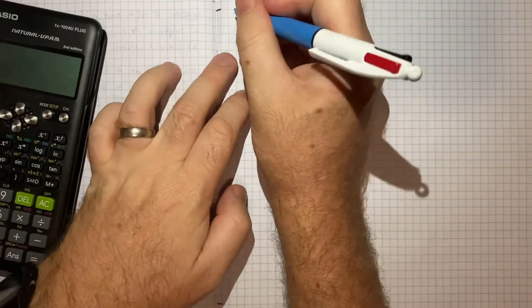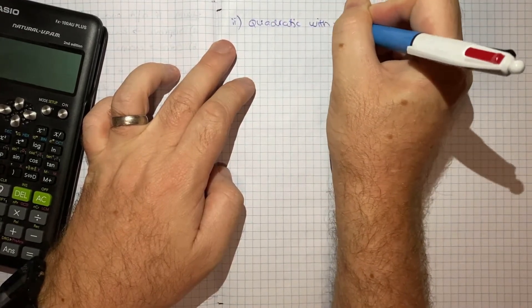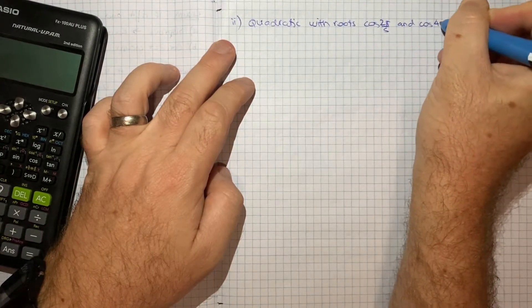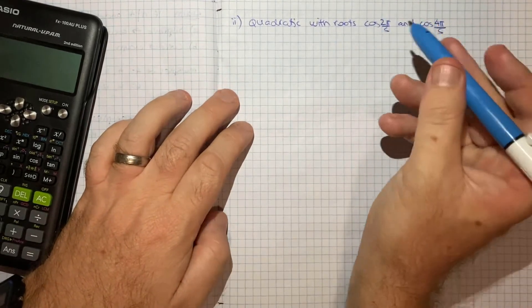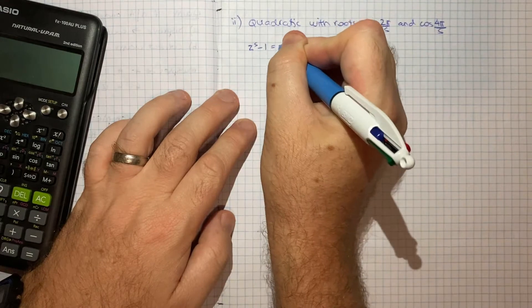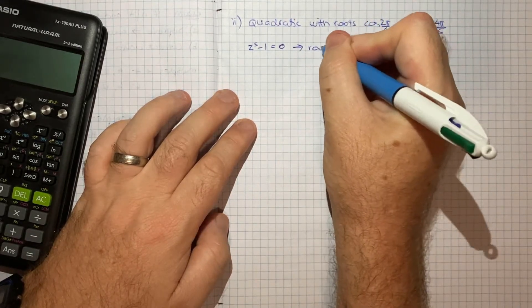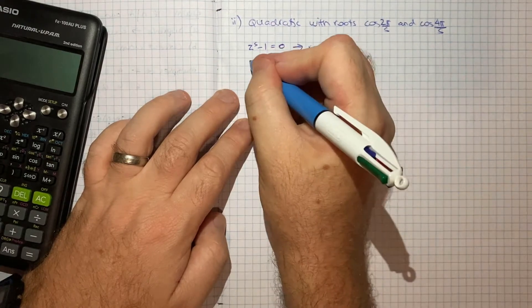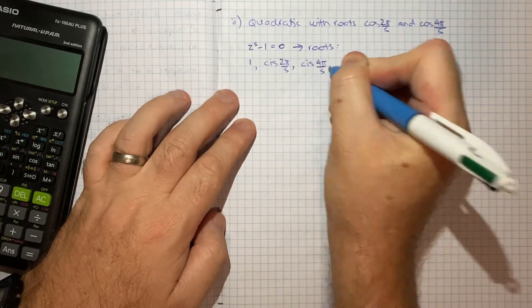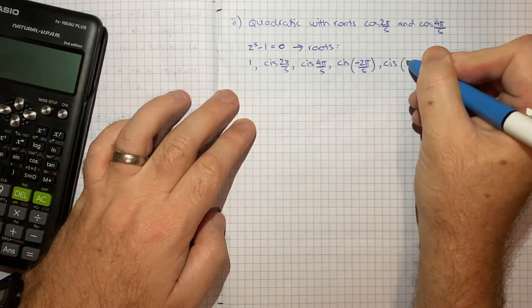So for part two, we're being asked to form a quadratic with roots cos 2π/5 and cos 4π/5. As I mentioned, we're really going to pick up from part one, which was all about the z to the 5 minus 1 equals 0, that classic roots of unity equation. In part one, we found that the roots of this equation were 1, cis 2π/5, cis 4π/5, cis negative 2π/5, and cis negative 4π/5.